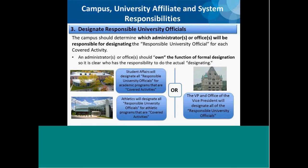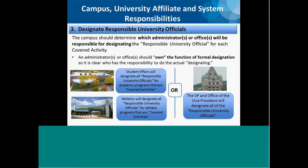Campuses, university affiliates, and system administration should determine which administrators or offices will be responsible for designating responsible university officials, so that the line of responsibility is clear. For example, the Student Affairs Office might designate responsible university officials for covered activities that are part of academic programs, the Athletics Department for athletic programs, or alternatively the Office of the Vice President might be responsible for designating responsible university officials for all covered activities, regardless of whether they are athletic, academic, or other categories.